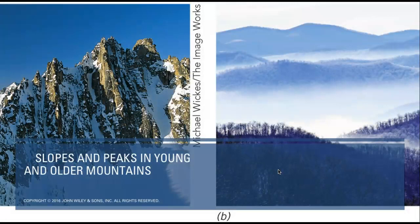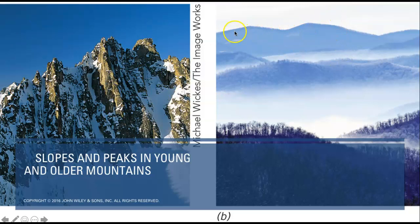Here is what a slope and the peaks look like in young and older mountains. On the left is the peak of the Rocky Mountains — very jagged and sharp. On the right are the Appalachian Mountains — very shallow and sloping, not very sharp, very rounded. This is due to the passage of time and the effects of erosion. Young mountain on the left, older mountains on the right.